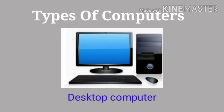Now we learn types of computers. The first type of computer is desktop computer. A desktop computer is quite large, as you can see in this picture. It cannot be carried easily from one place to another. It has many separate parts like monitor, keyboard, mouse and CPU.